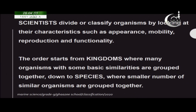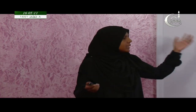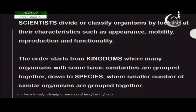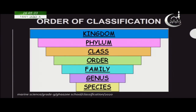Kingdom means there are lots of organisms which have some basic similar features. For example, kingdom Animalia means all the animals in the earth come under kingdom Animalia. When you go down the classification, it ends with species — very few organisms come under the same species.